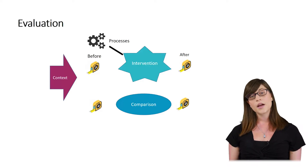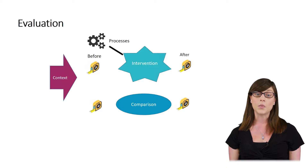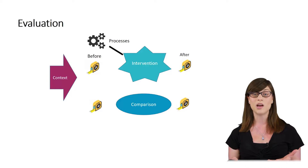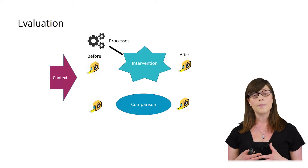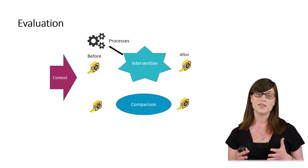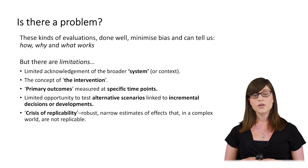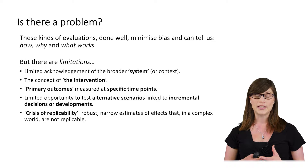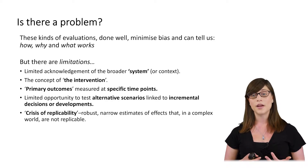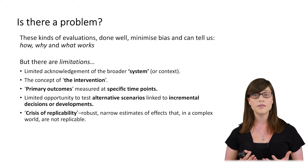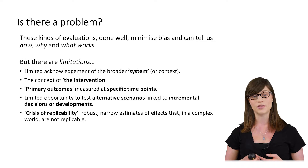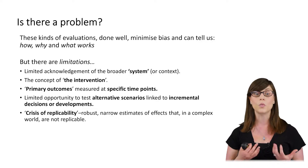The thing is, this kind of evaluation tends to proceed in a fairly linear way. You often start with the one or two outcomes you're really interested in, take your measurements, and that's pretty much the end of it. When done well, these evaluations are very good at minimizing bias and answering questions like 'what works.' And if you incorporate a process evaluation, they also allow us to answer things about how or why something works.